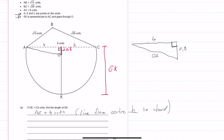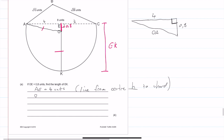It's important to realize that OA equals OK because both are radii of the circle. So we work out OA using Pythagoras: OA = √(4² + 0.8²), which gives OA = 4.08 units.